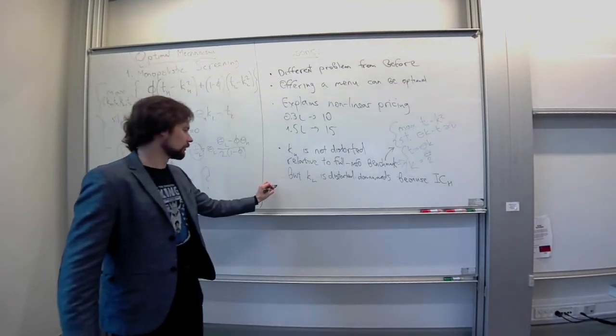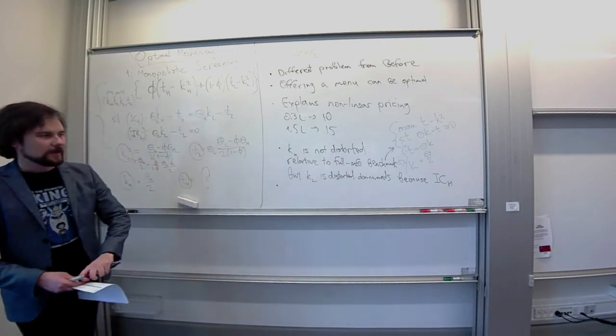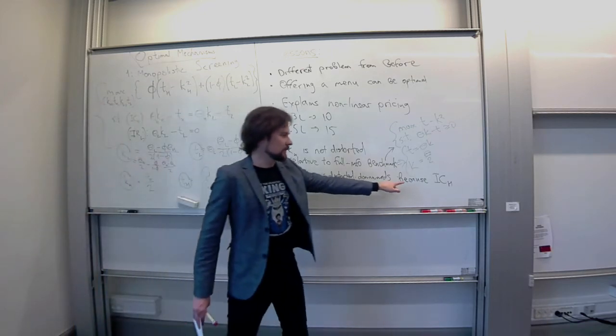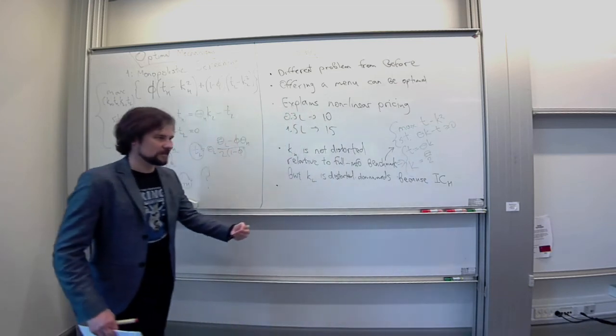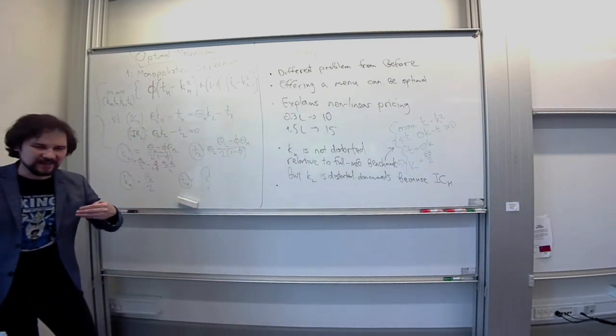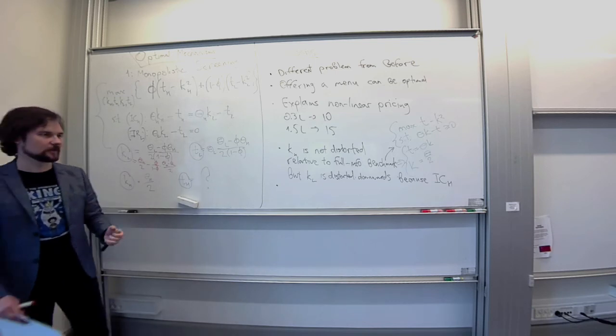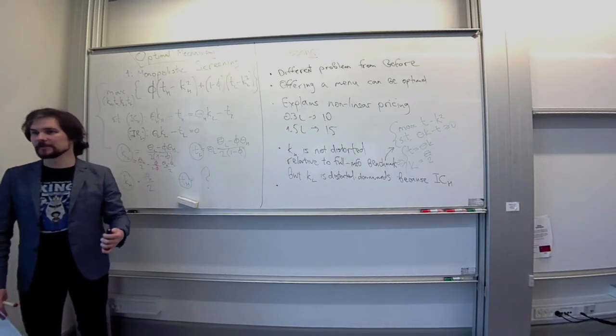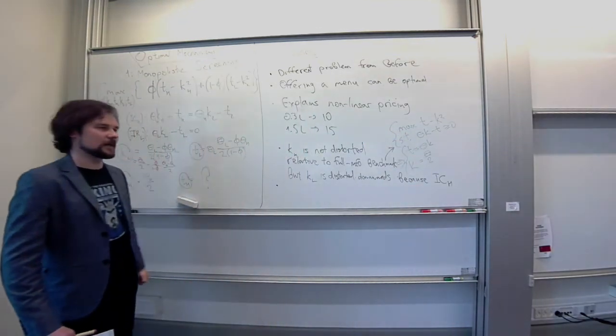And one, two final points. One is that if we are serving both types, both the high and low type, then this ICH actually binds. And what this leads to is we cannot extract all of the surplus from the high valuation buyer. This player lives with some information rent, with some positive surplus that we would have completely extracted in the full information benchmark.